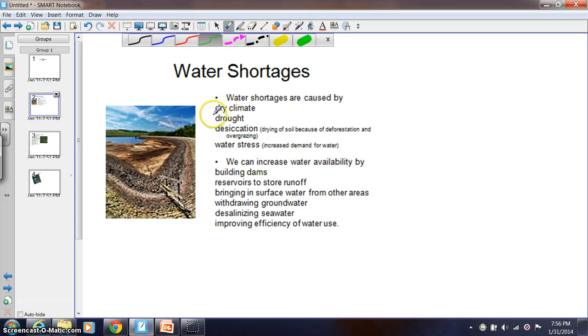Some of the things that contribute to it and make it even worse are a dry climate, going through a drought, desiccation which is the drying of soil as you can see pictured here. A couple things that lead to desiccation are deforestation and overgrazing. These two processes are unsustainable and help contribute to desiccation.